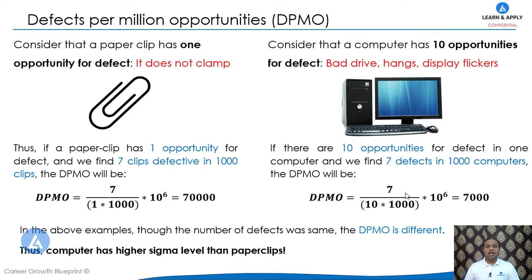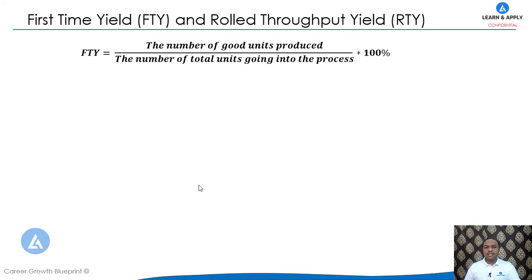In other words, the computer has a higher sigma level than paper clips. DPMO is a very important concept because it accounts for the complexity of the product. Therefore, instead of PPM, we use DPMO. The next important concept is First Time Yield, indicated by FTY.